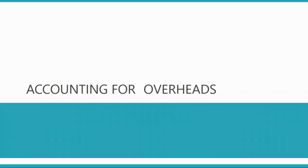For example, the electricity used while making that table — you cannot measure how much electricity is within the table. Or the equipment used to make the table had some depreciation, so how much of that depreciation is included in the cost of the table? That's not fairly measurable when you look at the table. Because these costs are inside the unit of output but you cannot fairly measure them, you call them overheads or indirect costs.